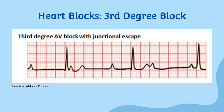Finally, let's talk about third degree heart block. This is also known as complete heart block and is characterized by complete disconnection between the atria and ventricles. The electrical signal from the atria does not reach the ventricles at all, and both the atria and ventricles beat at their own independent rate. On an EKG, it appears as a complete dissociation between the P waves and the QRS complexes, with a ventricular rate that is independent of the atrial rate.